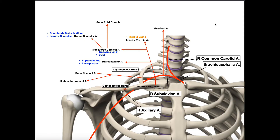Welcome back to Anatomy and Physiology on Catalyst University. In this video we're going to be discussing the subclavian artery by looking at its source and a bunch of the branches that come off of it. We also want to understand some of the major structures and muscles that are supplied by each of these arteries.